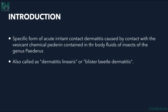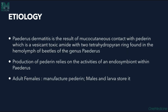Next is Paederus dermatitis. It is a specific form of acute irritant contact dermatitis caused by contact with the vesicant chemical paederin, which is contained in the body fluids of insects of the genus Paederus. This is also called Dermatitis linearis or blister beetle dermatitis. Paederin is a vesicant chemical toxin — an amide with two tetrahydropyran rings — found in the hemolymph of beetles of the genus Paederus.